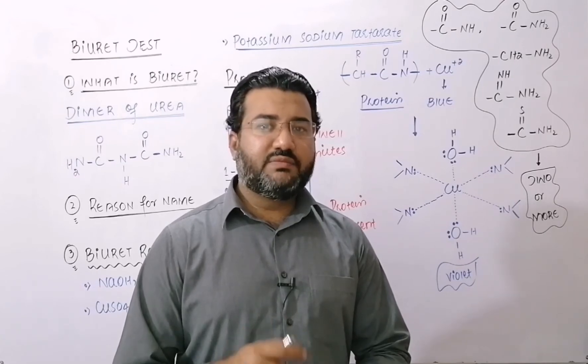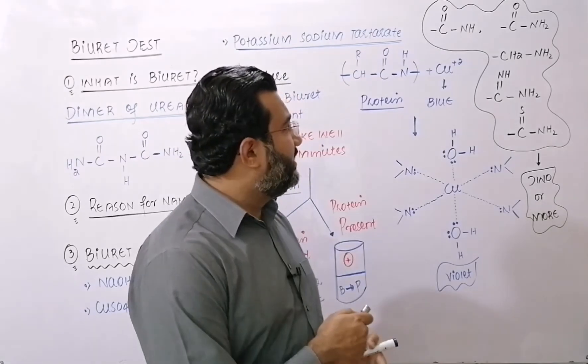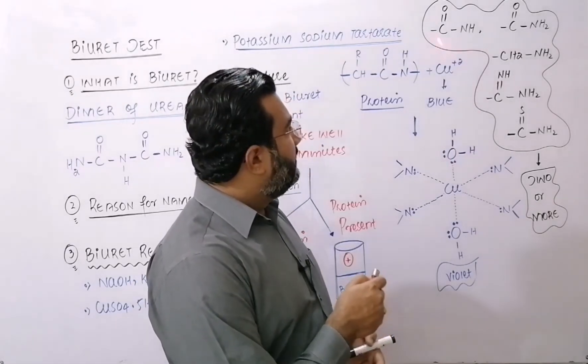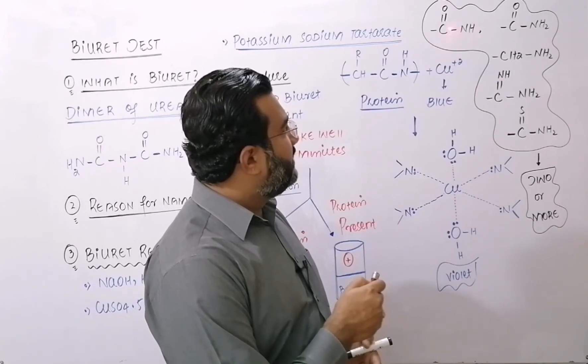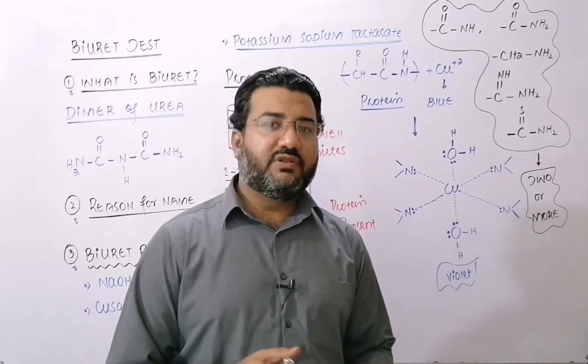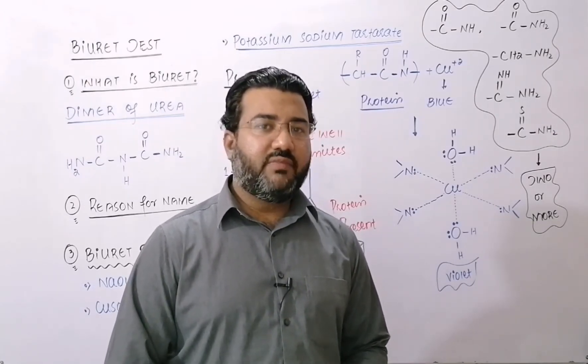But the dipeptides, tripeptides, polypeptides, they have 2 or more than 2 such kind of groups in their structure. Like you can say, C double bond O, NH groups present in the dipeptides, tripeptides, polypeptides. So that's why they will show the positive biuret test. But amino acids will show the negative biuret test.